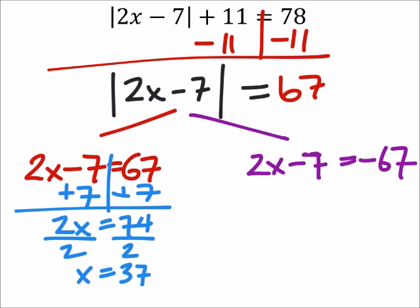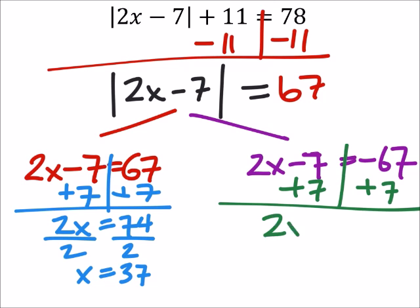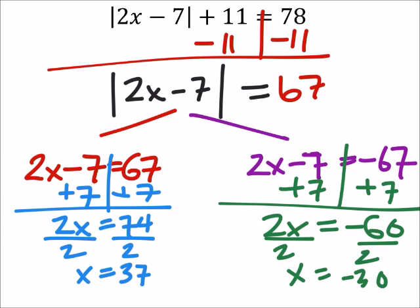Now on the other hand, we've got 2x minus 7 equals negative 67. Add 7 to both sides, and we've got 2x equals negative 60. Divide both sides by 2, and x equals negative 30. And there's my two answers.